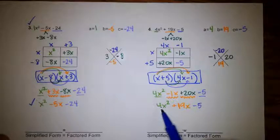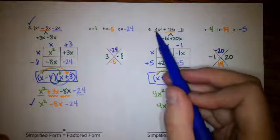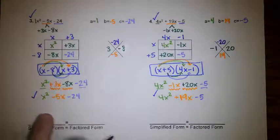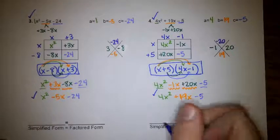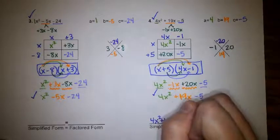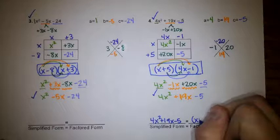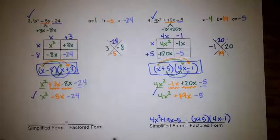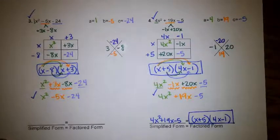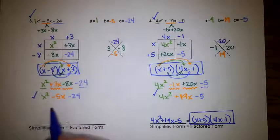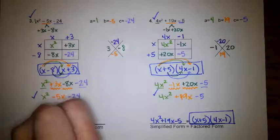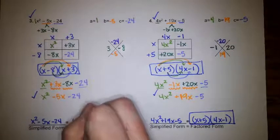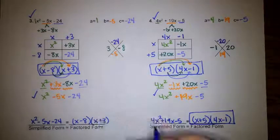So our simplified form for number 4 is 4x squared plus 19x minus 5, and our factored form is x plus 5 times 4x minus 1. For number 3, the simplified form was x squared minus 5x minus 24, and the factored form was x minus 8 times x plus 3. When asked to factor these, your answer would be the factored form.